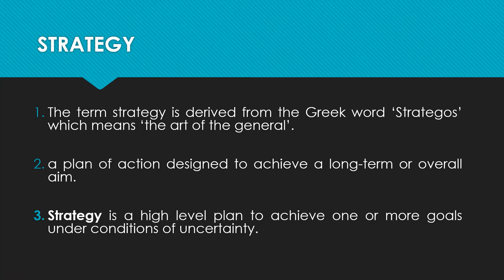Strategy is also a high-level plan to achieve one or more goals under conditions of uncertainty — conditions which may or may not happen in the future. For achieving a long-run goal you obviously have to take risks in business. The conditions are uncertain in nature, meaning you don't know whether you can achieve the goal or not. In such cases you have to create a strategy — a high-level plan under uncertain conditions to achieve certain goals for the long run.